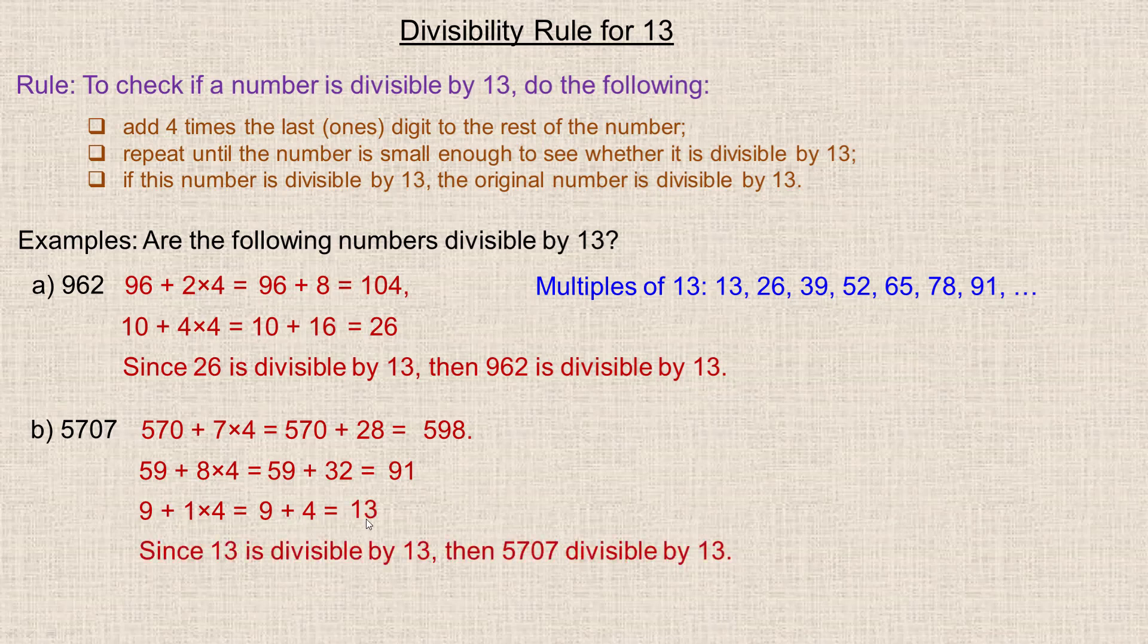So 13 is divisible by 13, so 5707 would be divisible by 13. You can certainly stop here if you recognize that 91 is a multiple of 13, but if you don't, you can do this last step as well.